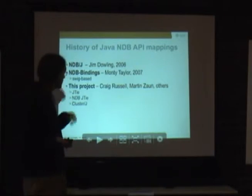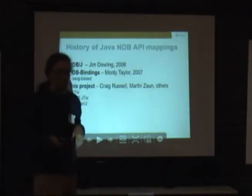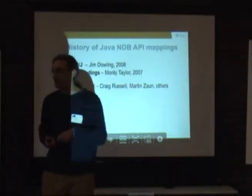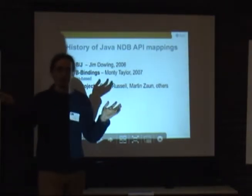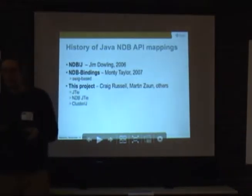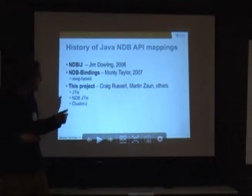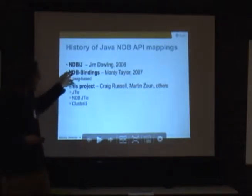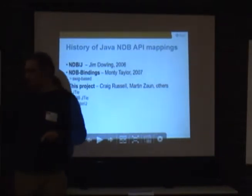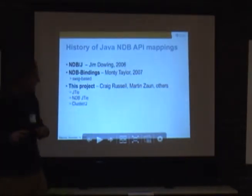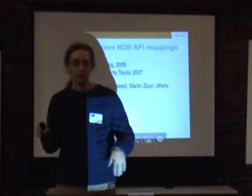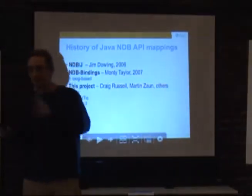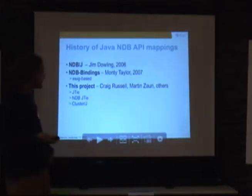First, Jim Allen did NDBJ in about 2006, which took as much of the API as he needed and made it work from Java — a big C++ API with some amount of it completely written by hand. The second was Monty Taylor using SWIG NDBBindings — feeding the NDB API into SWIG and it creates bindings for Java and Python and Perl and a bunch of languages.